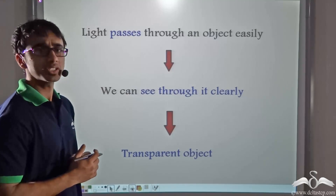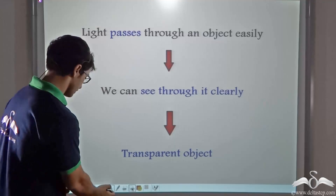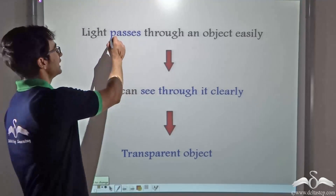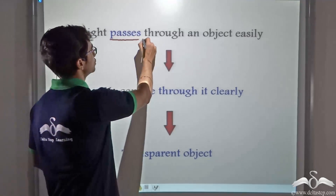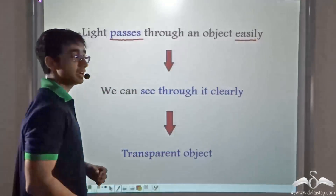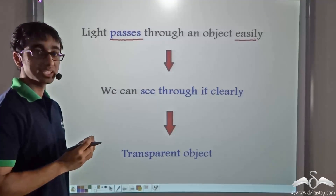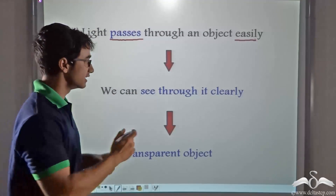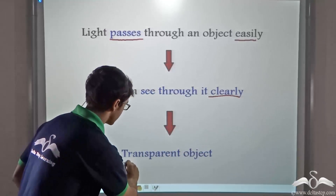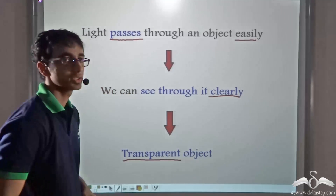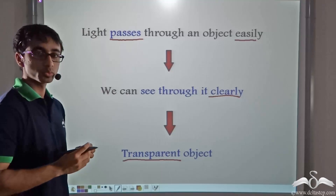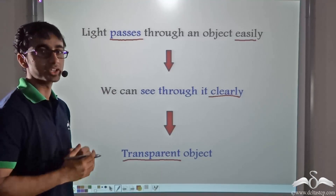So what do you think such objects are called? Objects through which light passes through very easily and through which we can see clearly are known as transparent objects. So in the previous example, glass was a transparent object.